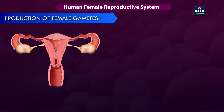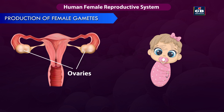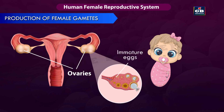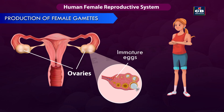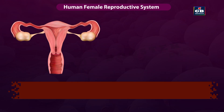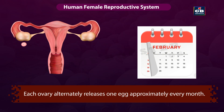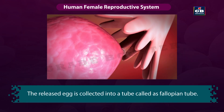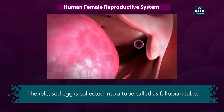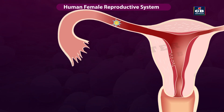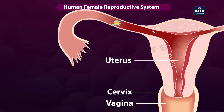Let us see the production of female gametes or egg cells. This task is done by the ovaries. By birth, girls contain a pair of ovaries, and each ovary contains thousands of immature eggs. On reaching puberty, these eggs start maturing and get released. Each ovary alternately releases one egg approximately every month. The released egg is collected into a tube called the fallopian tubule. Sperms deposited by the male in the vagina during sexual intercourse travel through the cervix, uterus, and reach the egg present in the fallopian tubule.